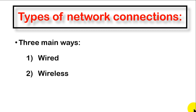Number two is wireless — that means there is no cable; you are going to use wireless technology, communicating using the antenna. And finally, you can connect networks by using mobile phone lines or mobile phone numbers. So these are the main ways to connect your network. Now let's explain them one by one.